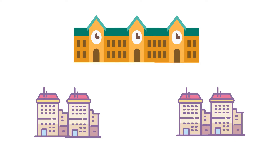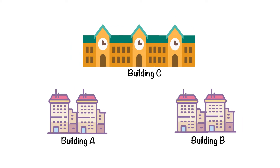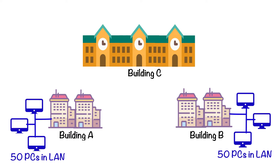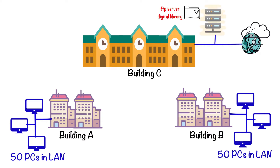Let's take an example. Suppose there is a campus with three buildings: building A, building B, and building C. In building A, 50 PCs are connected and they have created their own local area network. The same applies for building B. But building C has a different network structure — in building C there are servers, and internet is located there. Some services are running like an FTP server.